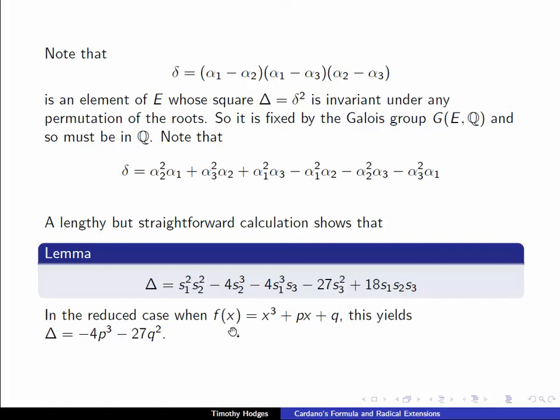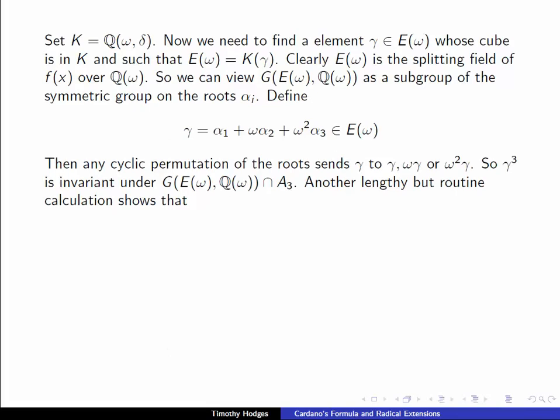And when we go to the classic case x³ + px + q, this simplifies to the formula Δ equals -4p³ - 27q². So that's the first part of the radical, the series of radical extensions.